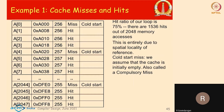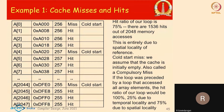The misses you're incurring are compulsory misses — you couldn't have avoided them because you have to bring the line into the cache for the first time. A compiler may not do much about these, except possibly prefetching. If you're repeatedly executing this loop, in subsequent iterations all accesses will turn into hits because the entire 2k element array remains in the cache until something else replaces it. Therefore, in subsequent iterations you get 100% hits.